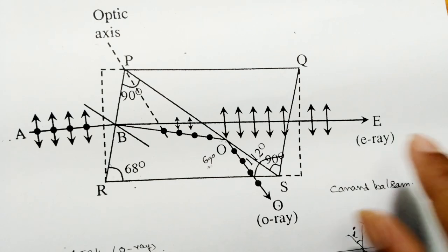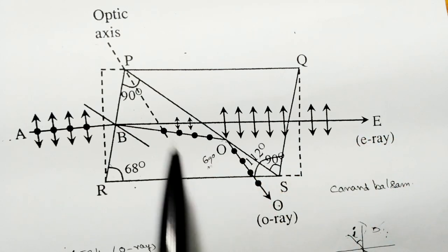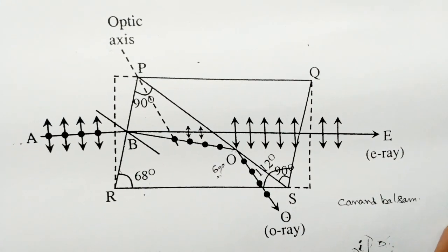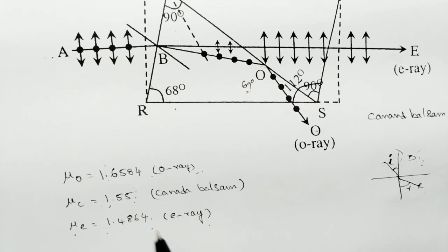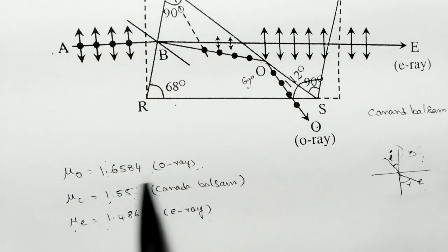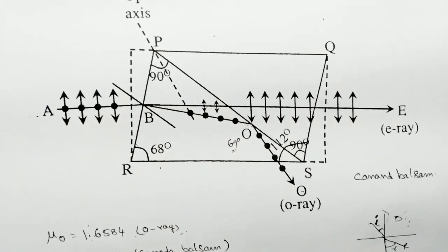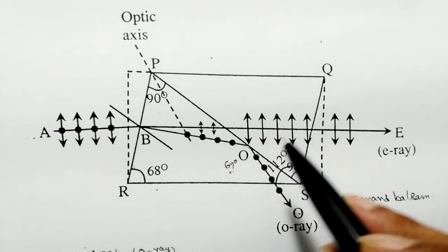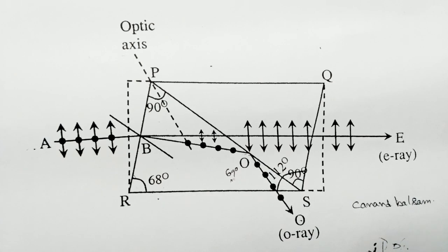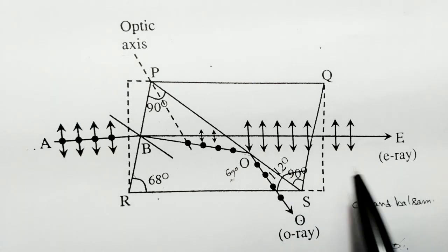This is the important question from polarization — Nicol's Prism. Remember the numerical values. The uses of Nicol's Prism include: when two prisms are placed one behind the other, they are used in optical microscopes for studying the optical properties of crystals.